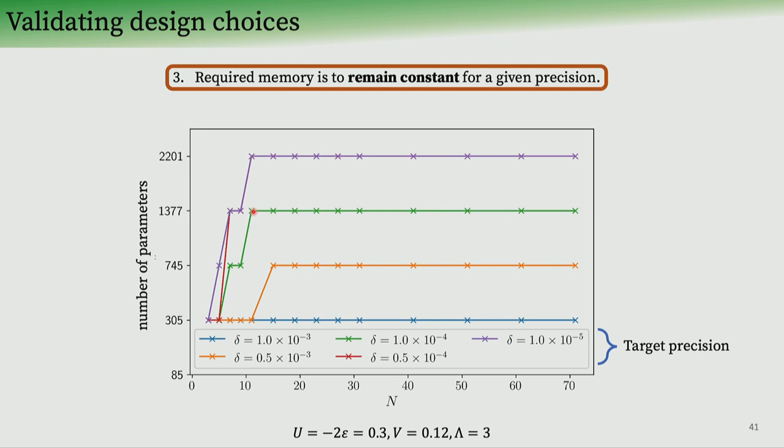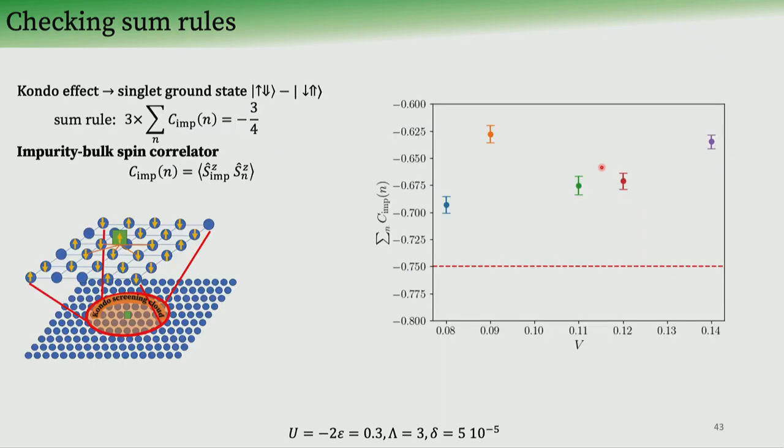It does not grow any further regardless of how long we make the Wilson chain. That's the amount of parameters that we need to find the ground state, which is quite neat, because essentially now, well, you could just go on making the Wilson chain longer if you do need that for your simulation.